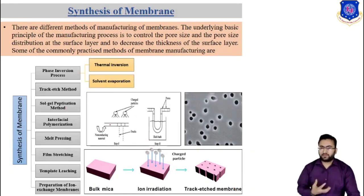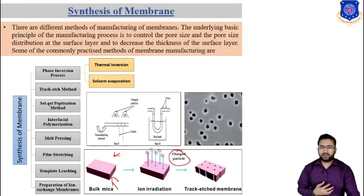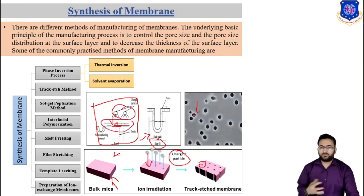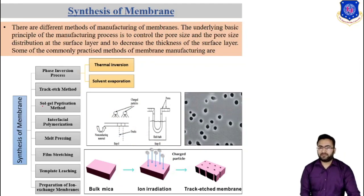Next is the track-etch method. In this method there are mainly two steps. In step one, a polymer film or sheet is passed through charged particles. When the charged particles strike the membrane sheet, they make pores. In step two, we etch this membrane in an etch bath to get a uniform pore size. So this is the track-etch method.